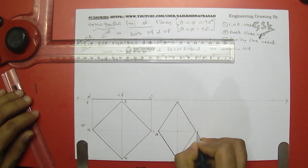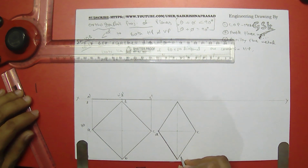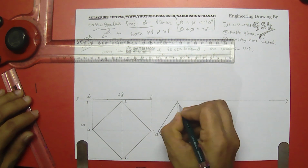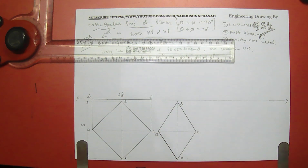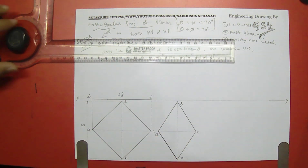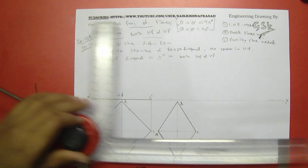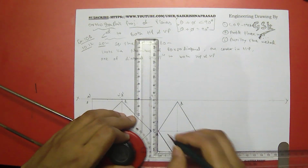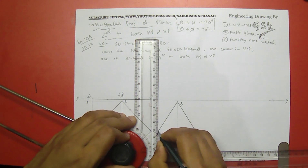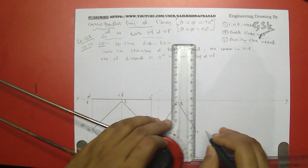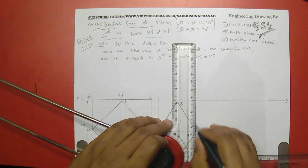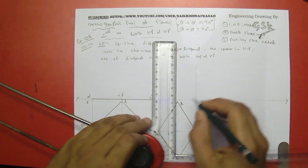The corners are labeled A, C, B, D. Now I will project the projectors from the front view. One corner is resting on the ground, so let me take A as resting on the ground. From here, when I tilt the figure in this manner, let me show this using the file.